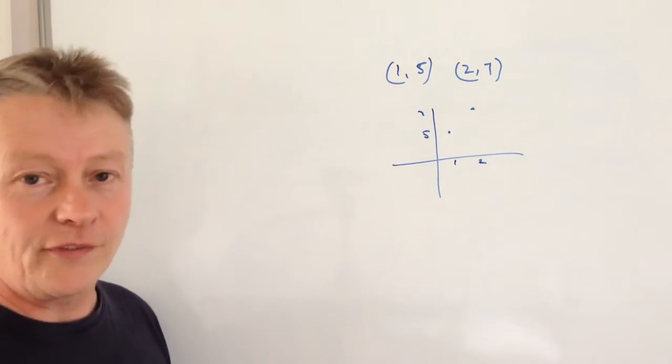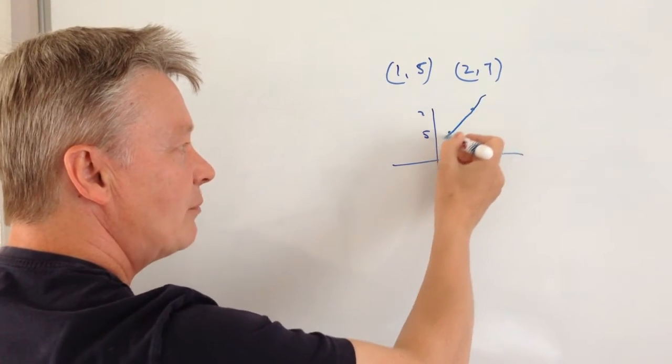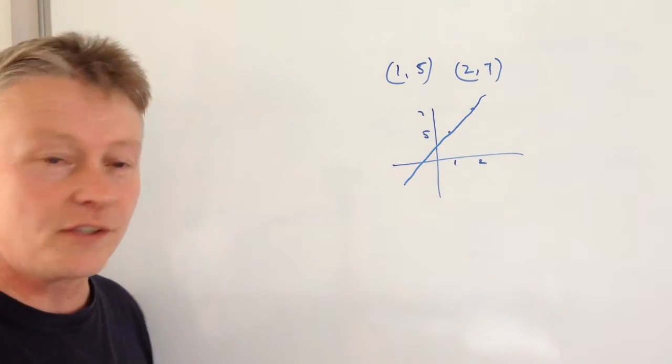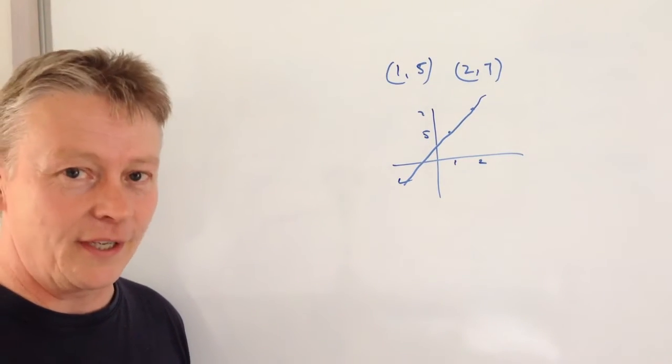So the first thing I know is that if it's passing through these two points then it's a positive gradient. In other words, it's a bit like a tick, isn't it? It kind of goes that way, so it's a positive gradient.